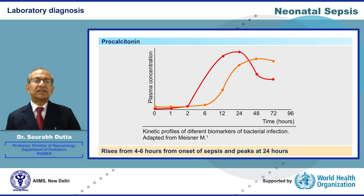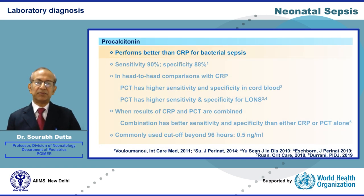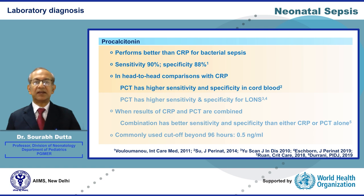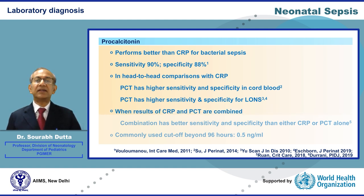Procalcitonin rises from 4 to 6 hours from the onset of Sepsis and peaks at 24 hours. Procalcitonin performs better than CRP for bacterial Sepsis — in a meta-analysis, its pooled sensitivity was 90% and specificity 88%. In head-to-head comparisons with CRP, procalcitonin has been found to have higher sensitivity and specificity, both in cord blood as well as for late onset Sepsis. If both CRP and procalcitonin are performed, their results can be combined, with the combination having better sensitivity and specificity than either alone.